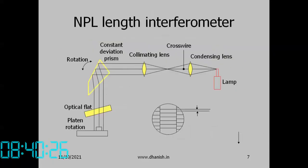This is the optical part of the NPL type length interferometer. We have a lamp placed at the focus of a condensing lens. A collimating lens creates a parallel beam of rays, and then there is a constant deviation prism, which rotates all colours by the same amount. This prism can be rotated to select different colours.